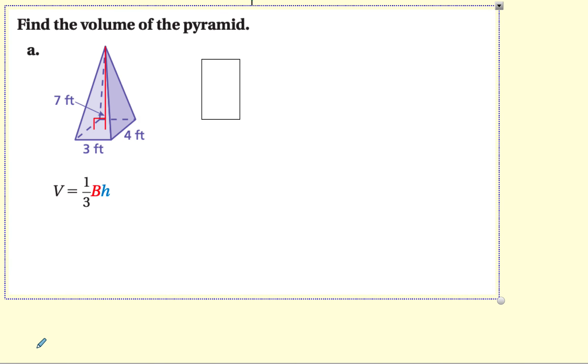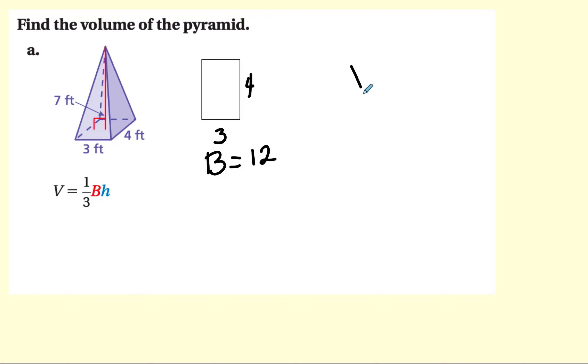Let's go ahead and talk about this problem. We want to first draw the base, and the base is a rectangle. And so this is the base, and it's 4 and 3. So the area of the base will be like finding the area of a rectangle, which will be 12. Now that we have the base, we can again start off with our formula.